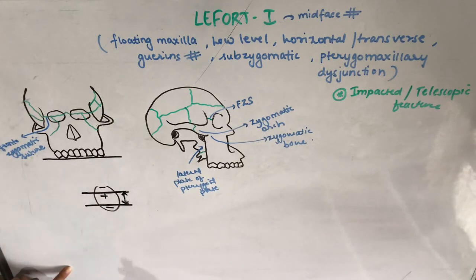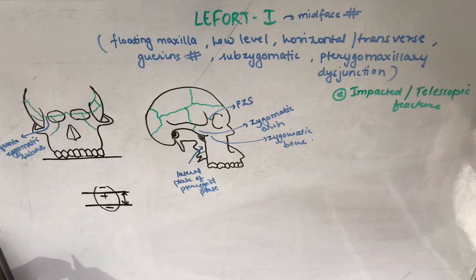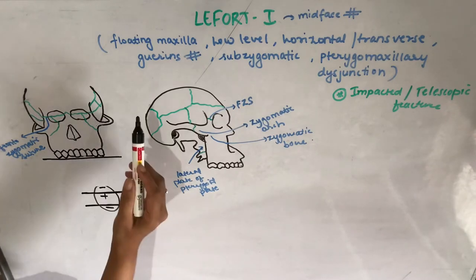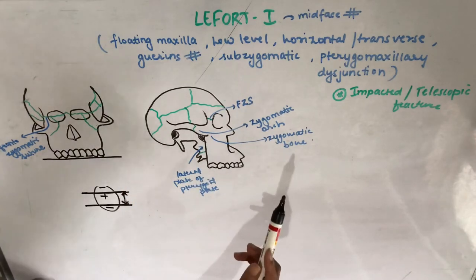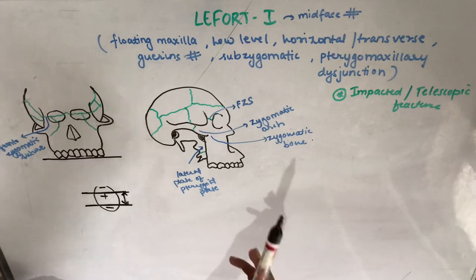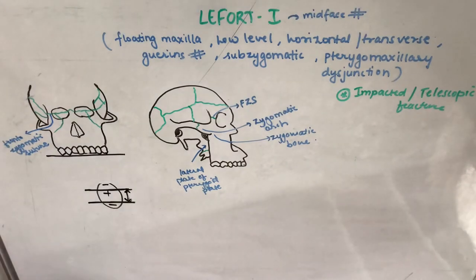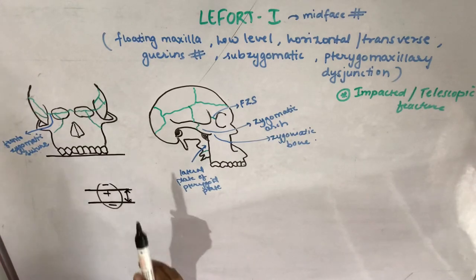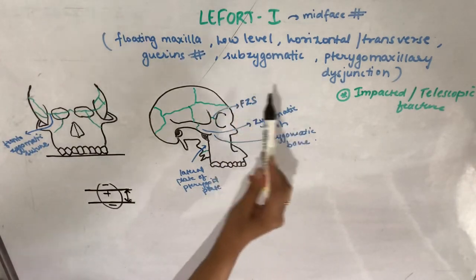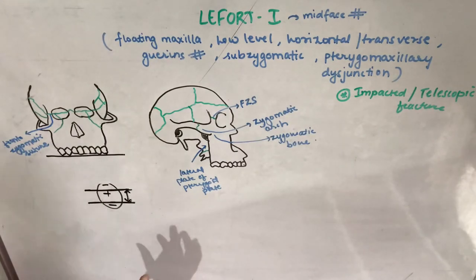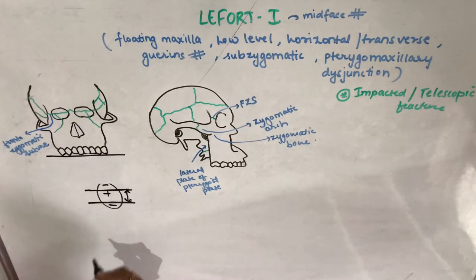Le Fort 1 is also known as floating maxilla, low level fracture, horizontal or transverse fracture, Guerin's fracture, subzygomatic fracture, or pterygomaxillary disjunction. Rather than just memorizing these synonyms, you need to understand the concept behind why they have so many names — watch the video till the end to know the exact meaning.